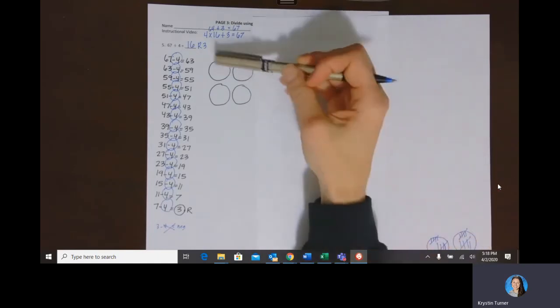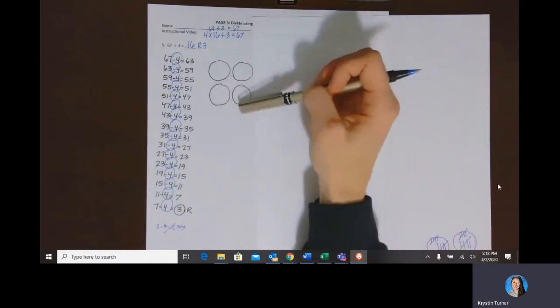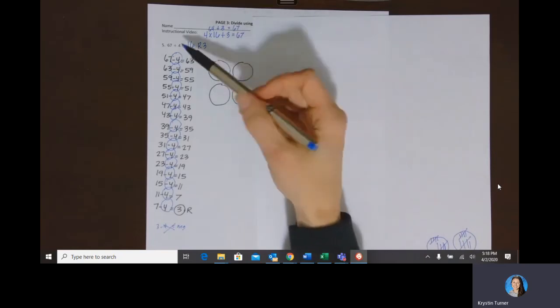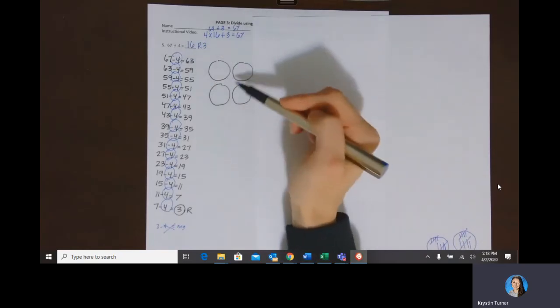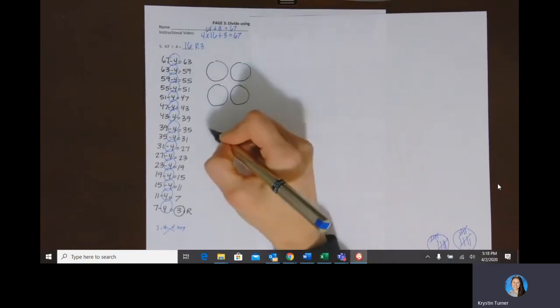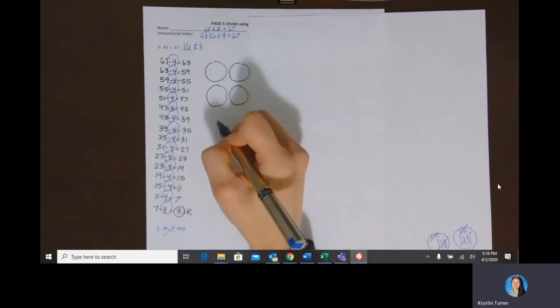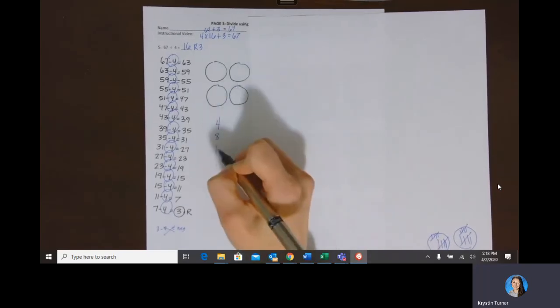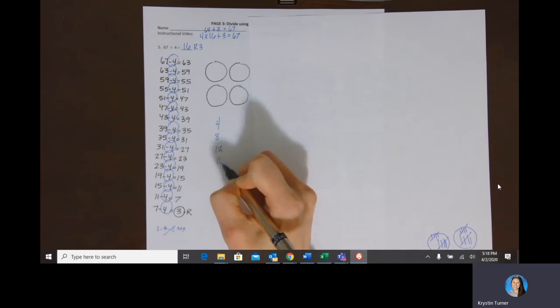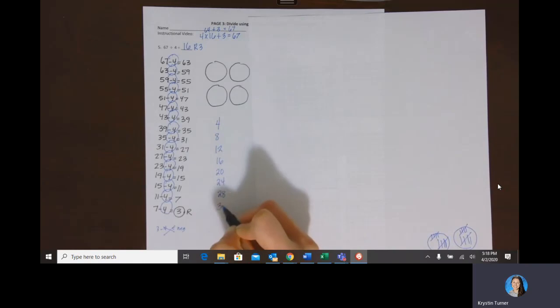So if I was doing it with these four equal groups instead of having to count 1, 2, 3 all the way to 67, I can think of those multiples of four, right? Four times one, four times two, four times three, four times four, four times five, four times six, four times seven, four times eight, four times nine.